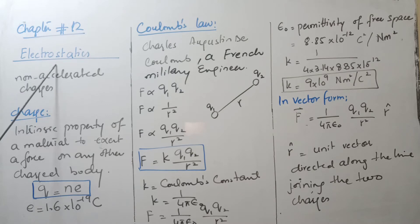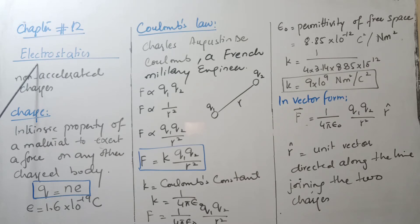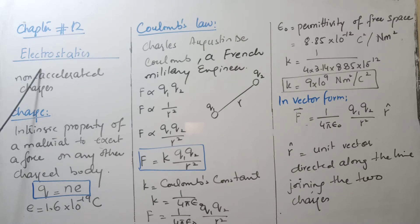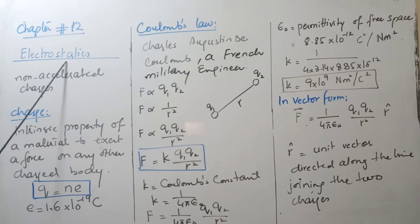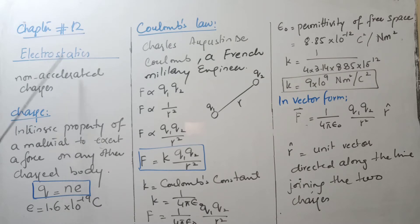Electrostatics is basically a combination of two words: 'electro' and 'statics.' Electro refers to charges — we have positive charges and negative charges. Statics means at rest. So electrostatics deals with charges that are at rest. Now let's go to the definition.